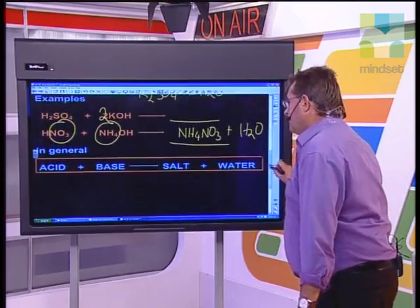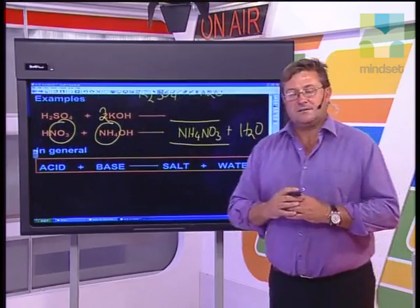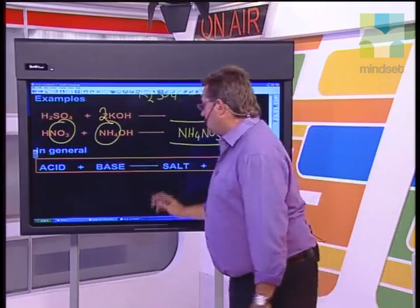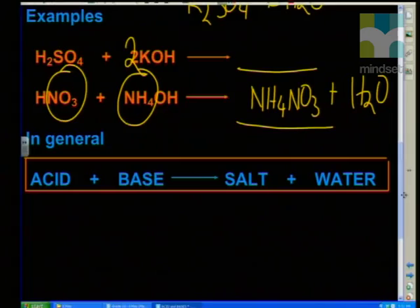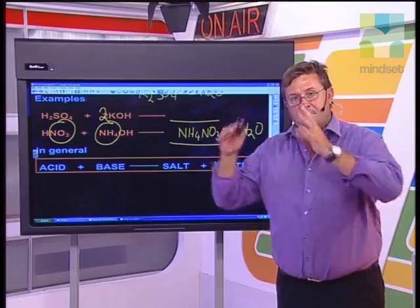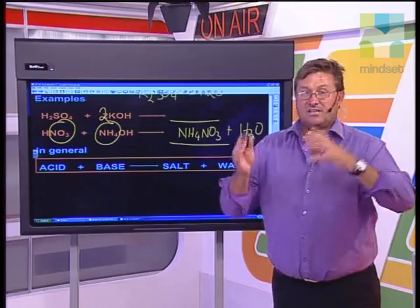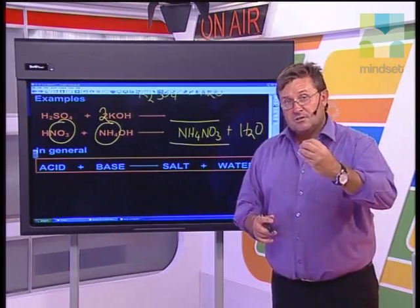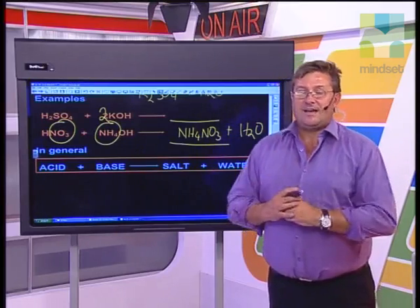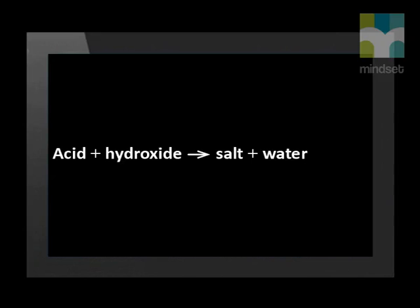Just to conclude this lesson, let's chat about our general equation. Acid plus base will always give us a salt plus water. So if you're studying a reaction between an acidic compound and a basic compound, you will know that you will always get a salt and water as products. Bruce has shown us that when an acid reacts with a base, which is a hydroxide, the products are salt and water.